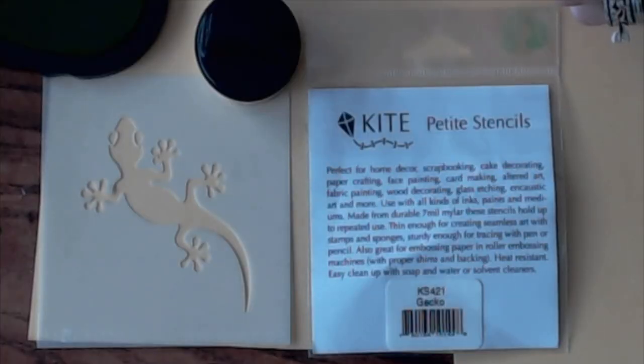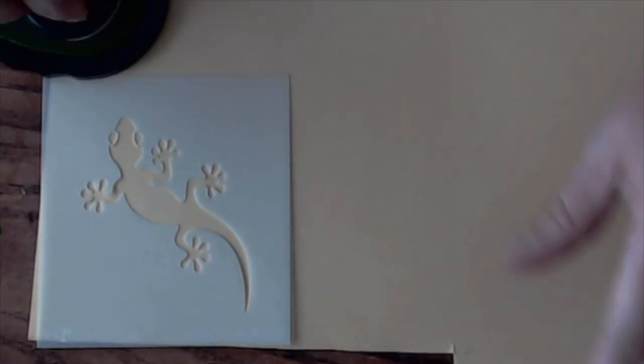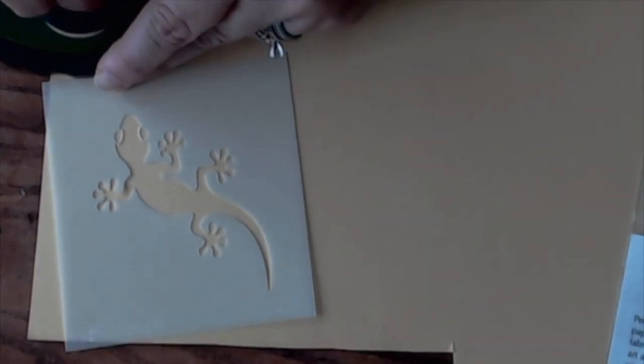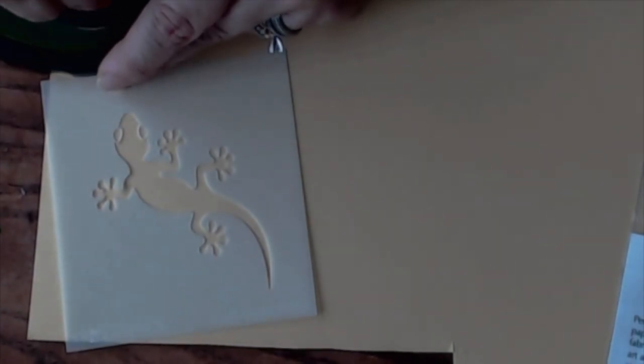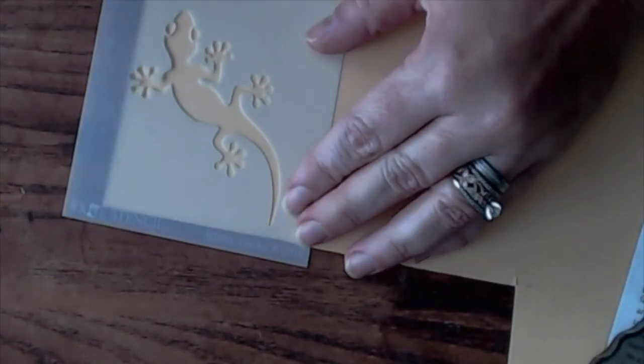Place the gecko kite stencil onto the pale yellow cardstock and use a color sponge to apply green ink. Fussy cut around the gecko. Mount the gecko to the bottom of the inside back page over the patterned paper.